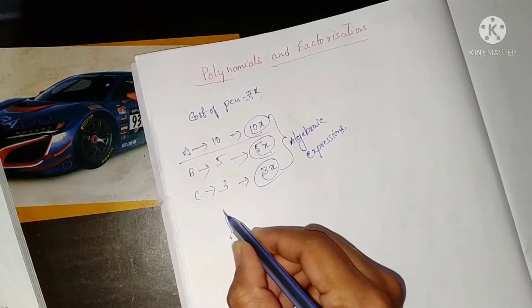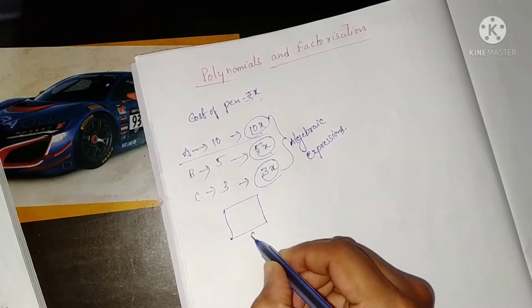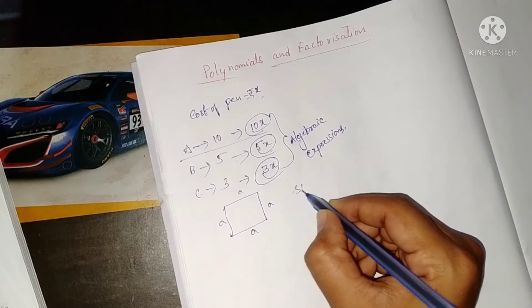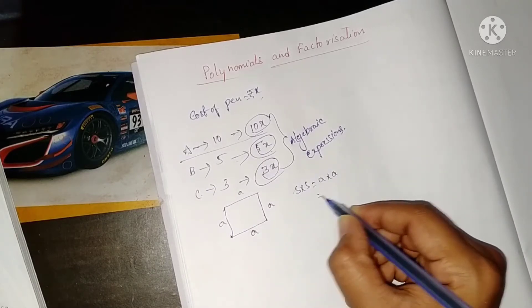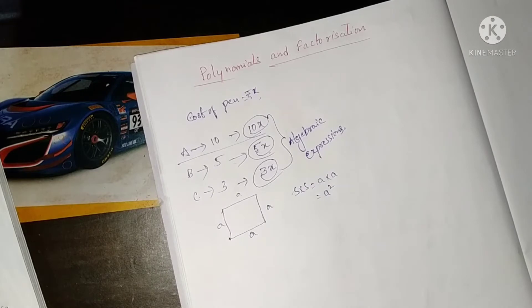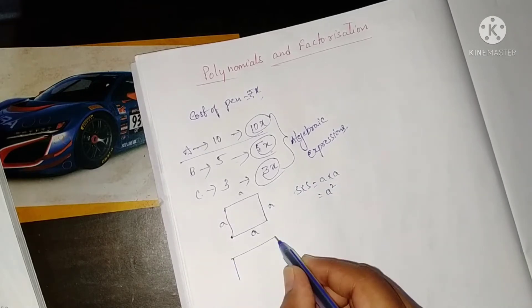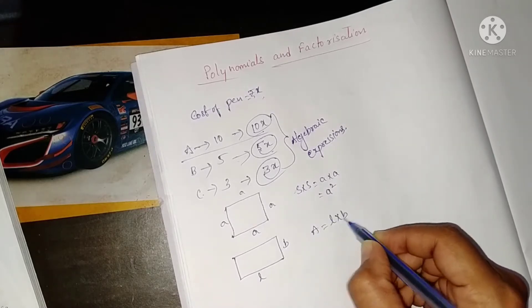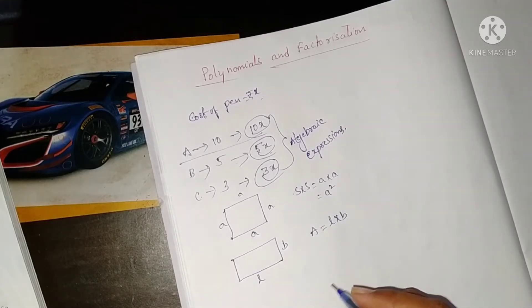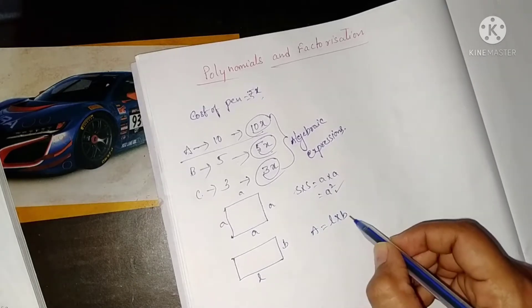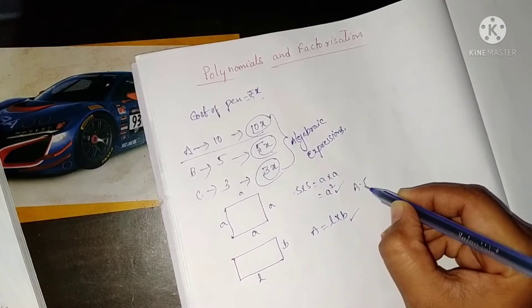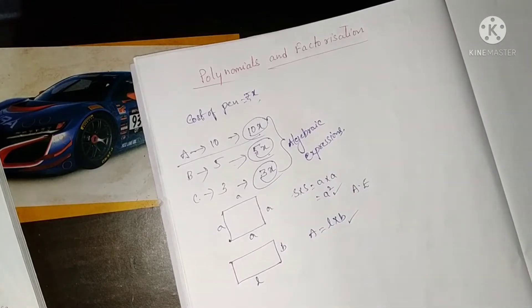You know the square — all four sides are equal. The area of a square is side × side, that is a × a = a². Similarly, the area of a rectangle is length × breadth = l × b. So a² and l × b are also algebraic expressions.